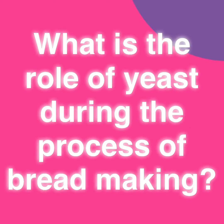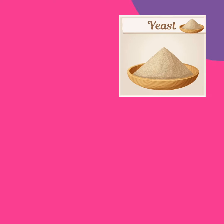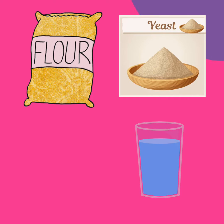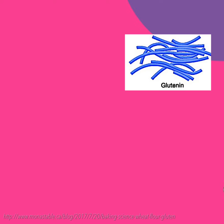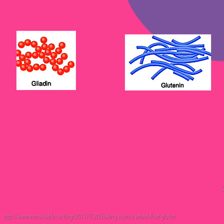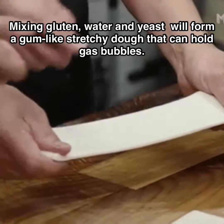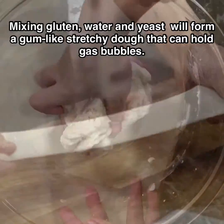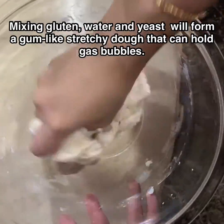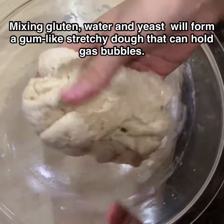So, what is the role of yeast during the process of bread making? The dough is basically made by combining yeast with flour, water, and some salt. Flour contains many long chain-like protein molecules known as glutinin and gliadin. When we combine them, they are called gluten. Mixing gluten, water, and yeast will form a gum-like stretchy dough that can hold gas bubbles.